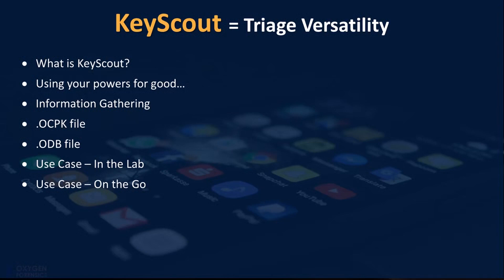Information gathering in Key Scout is configured by providing various parameters, to include specific folder level depth and folder locations. For instance, if you know the specific folder path for the data that is to be collected based on the scope of the investigation, you can make Key Scout collect only the contents of that folder. Conversely, if there is a specific folder that must not be collected but everything else is fair game, then you can exclude that folder entirely.